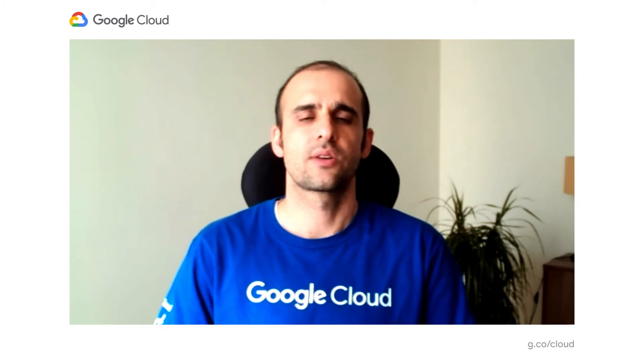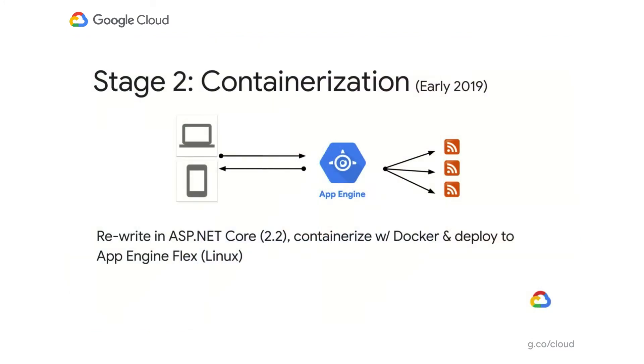We containerized our application with Docker using some base images provided by Microsoft, and then we could deploy to multiple places in Google Cloud. There were two good options: Google Kubernetes Engine and App Engine. We chose App Engine because all we needed was a web front-end and everything was bundled together, so App Engine served us well. Google Kubernetes Engine could have been better because it provided infrastructure for more complex architectures, but App Engine was enough for us.